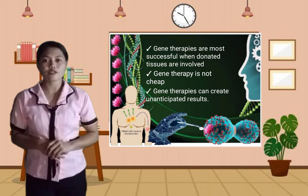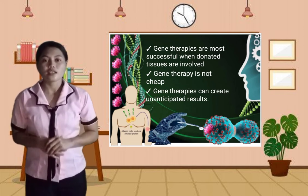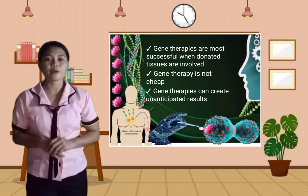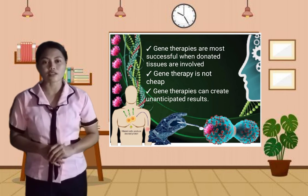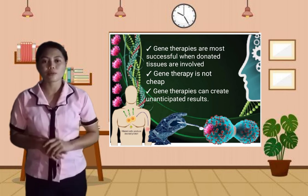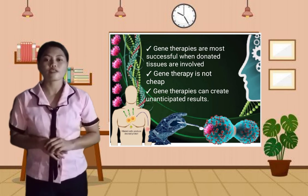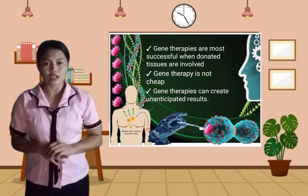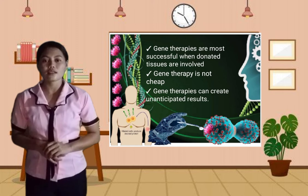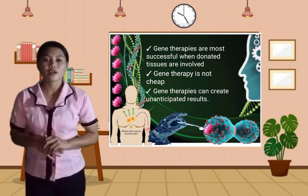Next, gene therapies are most successful when donated tissues are involved. Most successful gene therapy treatments today still involve donated tissues, such as bone marrow from people who are a direct match. Some donations can be extremely painful and create lifelong consequences for those involved.